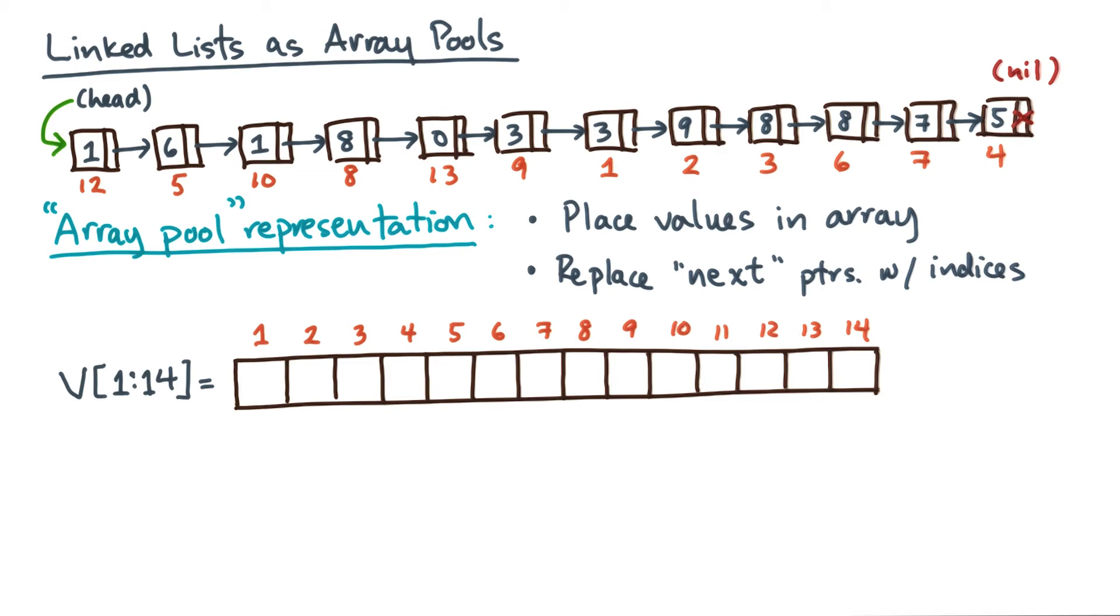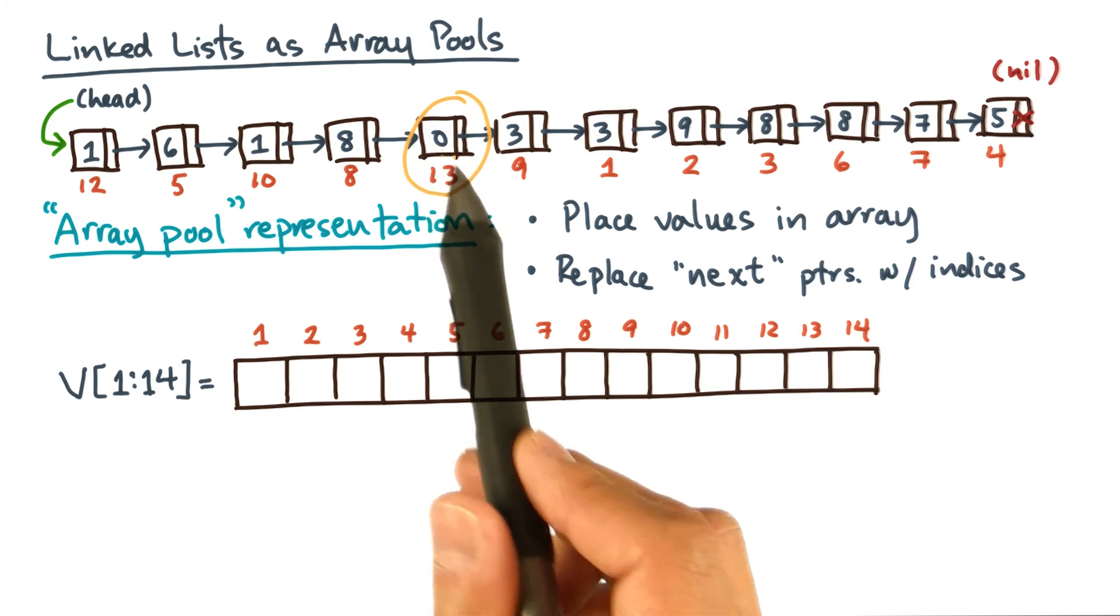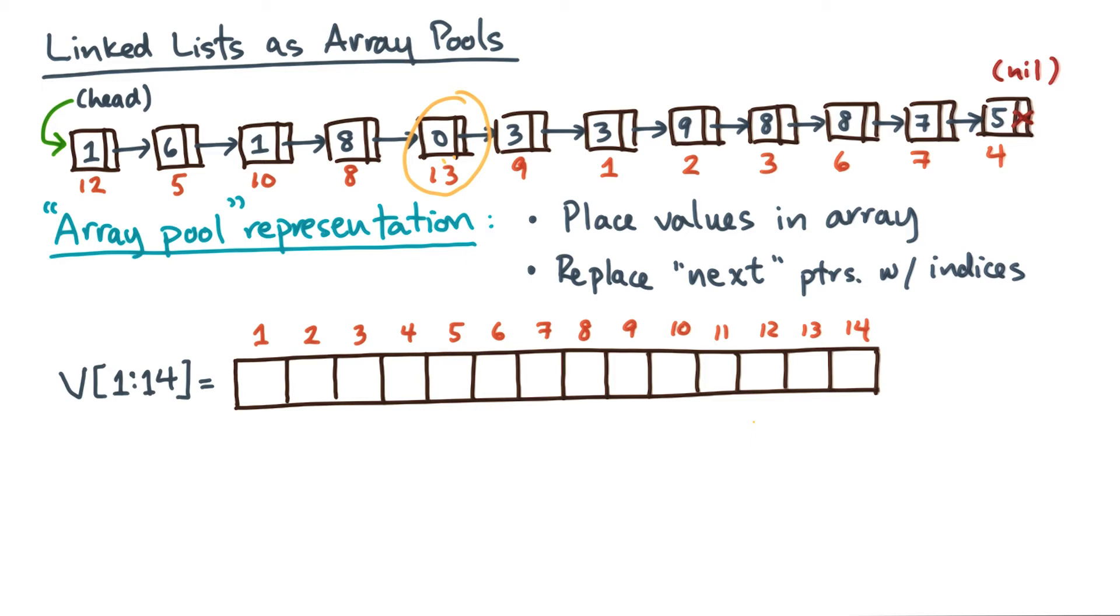Now, below each node in the input list, I've written an integer. Each integer will be the position of the corresponding value in the v array. For example, the node with value 0 resides in position 13 of the v array. So let's put it there.